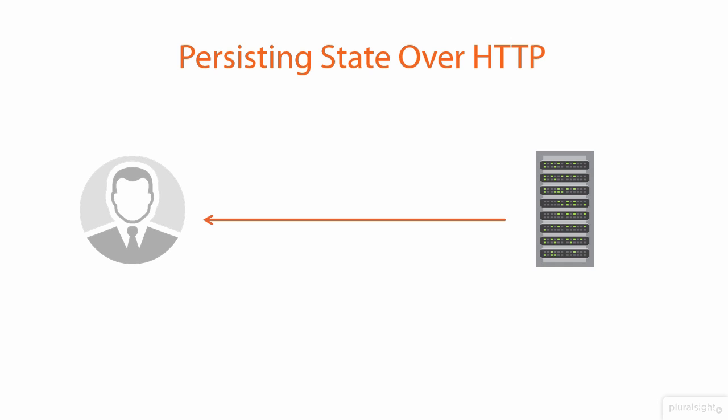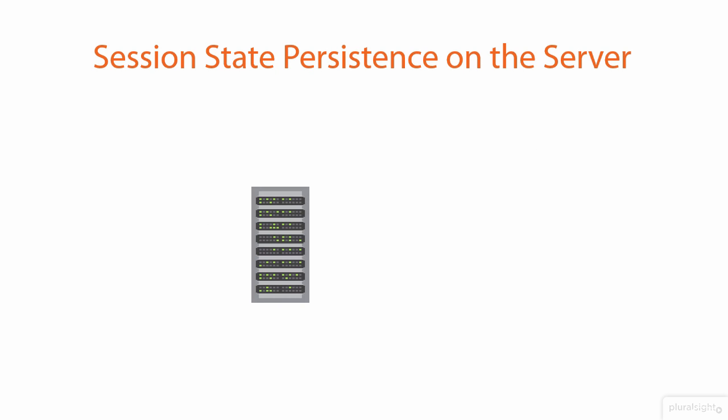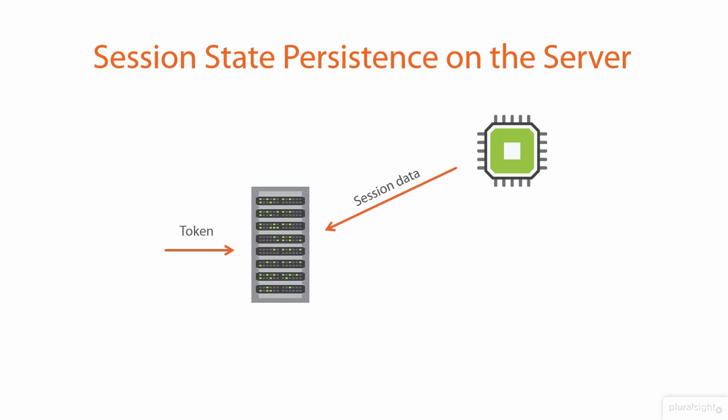Before we do that, there's one other thing I want to look at - what happens on the server side. Let's think about that request lifecycle from the previous slide in terms of what's going on on the server. The server, which is of course where the application is running, receives a request that has the token. Usually - and there are some exceptions we'll talk about - the server will then pull data about the session from a storage construct.